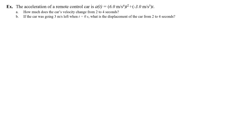Let's use these equations. The acceleration of a remote control car is 6 meters per second to the fourth times t-squared plus negative 3 meters per second cubed times t. Before I even read part A or part B, I'm going to write this in a more math-friendly way — taking out the units and writing 6t-squared minus 3t, trusting that the units agree and give me meters per second squared for acceleration when I plug in a value of t.